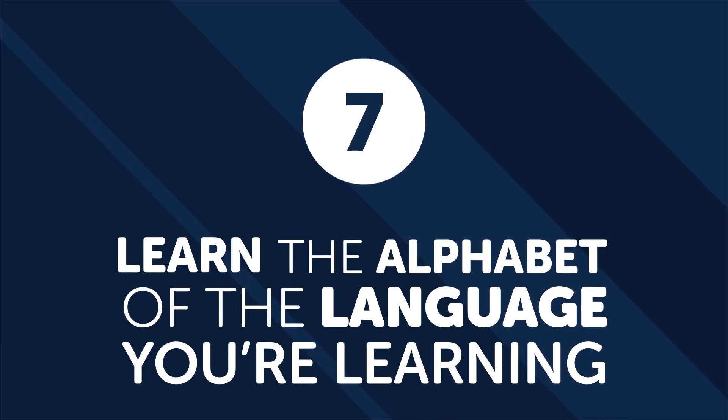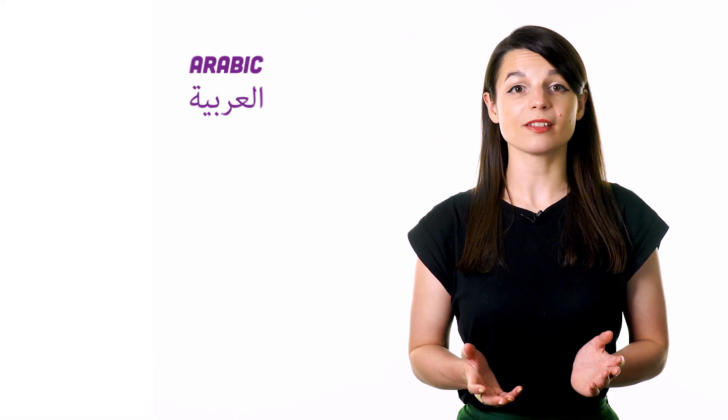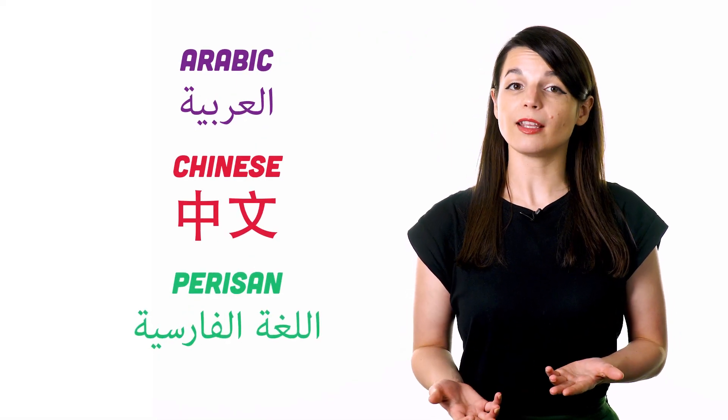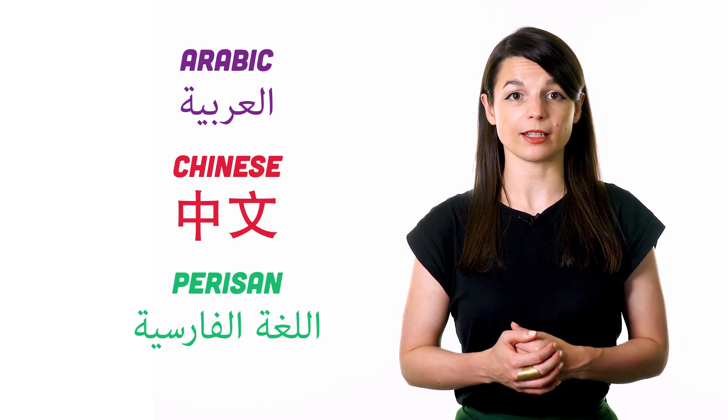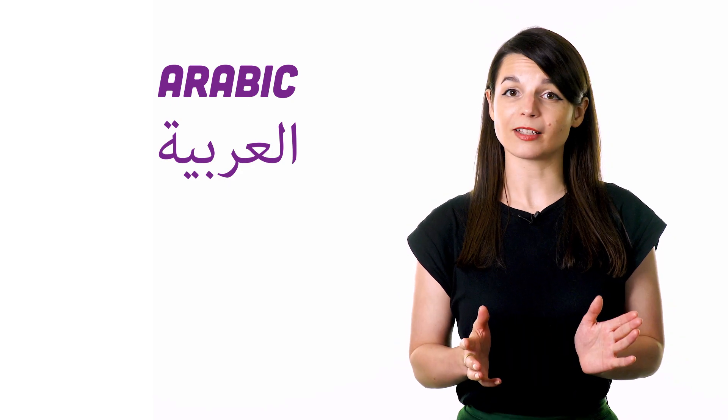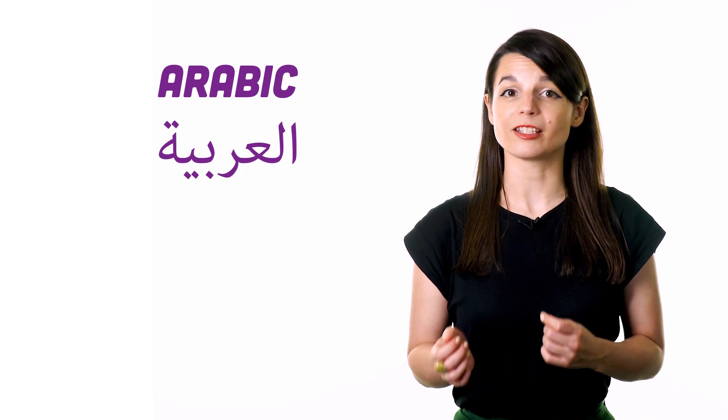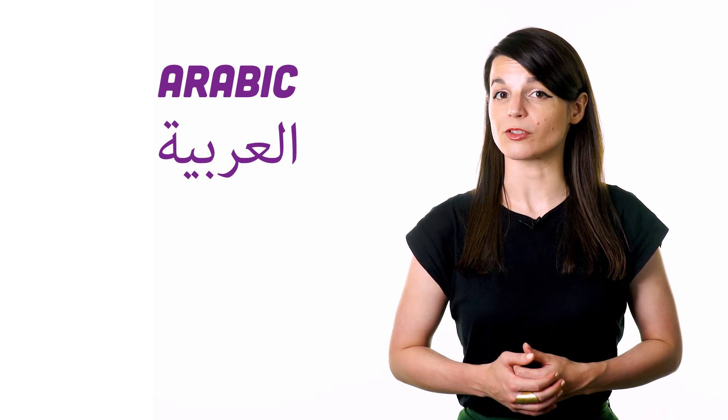Number seven, learn the alphabet of the language you're learning. Learning the alphabet is crucial for starting your language learning journey. There are many languages with unique and challenging alphabets that are necessary to master to learn the language. In many Asian languages, such as Arabic, Chinese, and Persian, mastering the alphabet or characters is necessary to read and pronounce words correctly. In modern standard Arabic, you must learn the alphabet, diacritics, and dotting to be able to pronounce and read expressions correctly. So, getting the alphabet down at the beginning of your language learning process is a necessary first step.